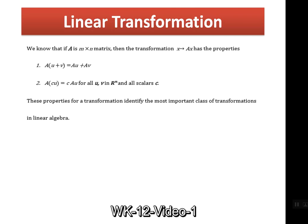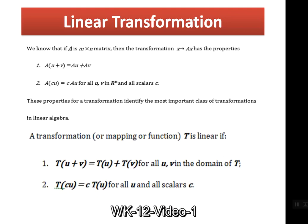We know that if A is an m×n matrix, then the transformation x → Ax has the properties: (1) A(u + v) = Au + Av — A maps u+v to Au plus Av; and (2) if any scalar c is multiplied, we can write it as A(cu) = c·Au, for all u, v belonging to vector space R and all scalars c. This transformation is called linear when written in this form. Transformation, mapping, and function — a transformation is also a mapping, and the function is linear.